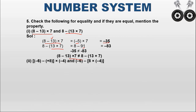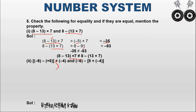Second pair: minus 6 minus (plus 8) into minus 4, versus minus 6 minus (8 into minus 4). For the first: execute the bracket — plus into minus becomes minus, so minus 6 minus 8. Both are negative, so add: 6 plus 8 equals 14, giving minus 14. Then minus 14 into minus 4: same signs, so positive. 14 into 4 equals 56, answer is plus 56.